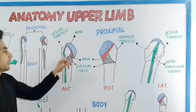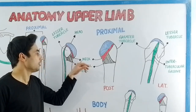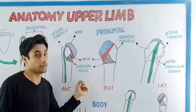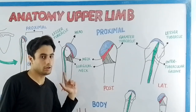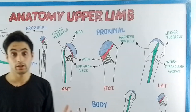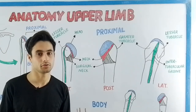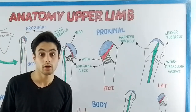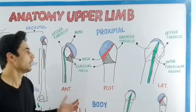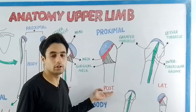Below the head we have the anatomical neck, and below the neck we have the surgical neck. This is really important because the surgical neck is related to the axillary nerve. If you have a fracture of the surgical neck, the axillary nerve will get damaged.